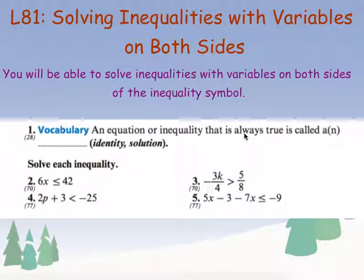Algebra 1 lessons 81 and 82: we are looking at inequalities — both inequalities that have variables on both sides, and compound inequalities that have a couple different steps we need to take in order to solve them.